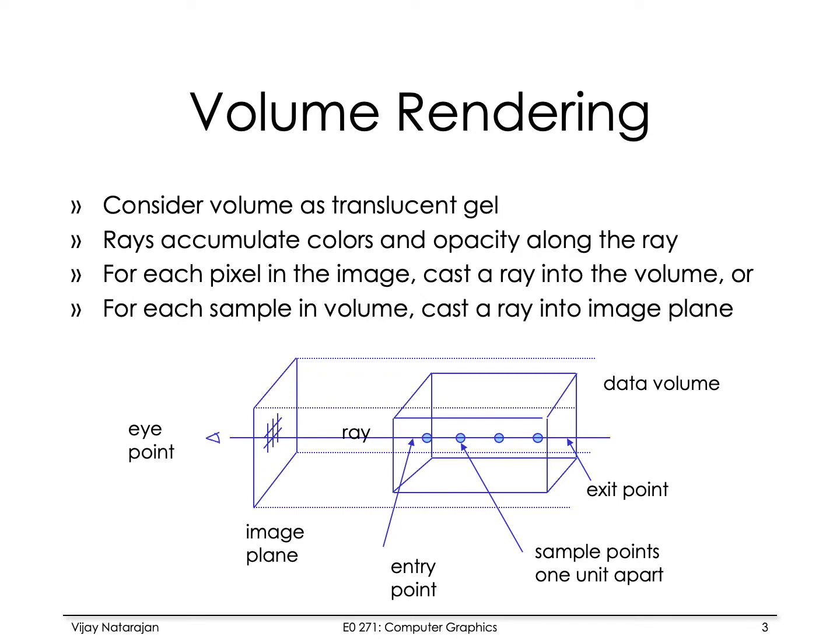Volume rendering essentially considers the volume as a translucent gel. Rays are sent through into the volume and these rays accumulate colors and opacity where the colors and opacity are determined based on the scalar values at the points along the ray. For each pixel in the image plane, you shoot a ray from the eye towards that particular pixel and this ray goes into the volume through an entry point and exits the volume through an exit point.